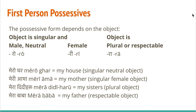Some examples: 'mero ghar' means 'my house' because 'ghar' is neutral. 'Meri aama' means 'my mother' because mother is female. 'Mera didiharu' — notice that 'didiharu', although female, becomes 'mera' because it's plural. And 'mera baba' — you say 'mera baba' because you are showing respect to father. Using 'hamro': 'hamro ghar' is 'our house', 'hamri aama' is 'our mother', and 'hamra didiharu' is 'our sisters'.